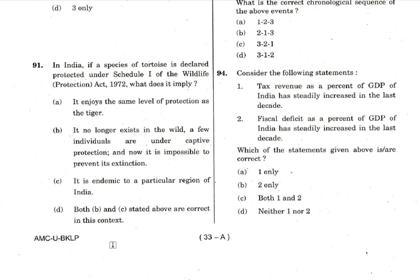Question 91: If a species of tortoise is declared protected under Schedule 1 of the Wildlife Protection Act 1972, what does it mean? Schedule 1 to 4 provides protection in decreasing order; Schedule 5 is vermin where you can kill the animal; Schedule 6 covers plants. Statement one — it enjoys the same level of protection as the tiger — is correct since tiger is in Schedule 1. Statements B, C, and D are all wrong. Answer is 91A.